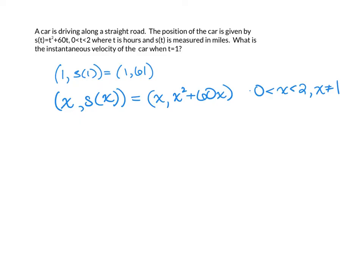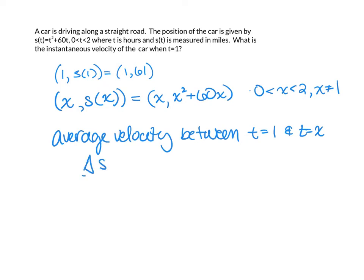Now, let's find the average velocity between t equal 1 and t equal x. So we do that by finding change in s over change in time. So we don't know whether x is bigger or smaller than 1, but it doesn't really matter as long as we always subtract in the same order.